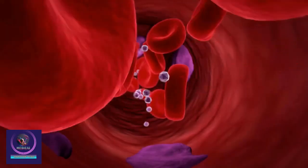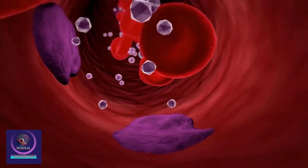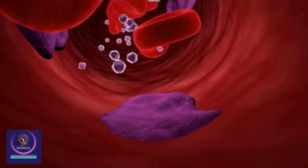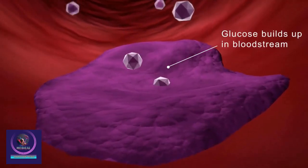Glucose is carried in the blood to the cells all around the body, but glucose can't get inside the cells without insulin. Insulin acts like a key that opens the door to the cell, allowing the glucose to enter.